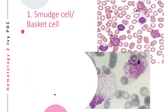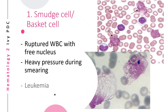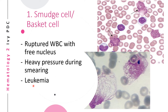Let's start with the smudge cell, also known as the basket cell. These cells are ruptured white blood cells leaving their nucleus free. They can be pathologic or non-pathologic. A non-pathologic cause may be during smearing — smudge cells are produced if there is heavy pressure on the spreader slide. A pathologic cause may be due to leukemia. It looks like a basket with a handle, and is also called a smudge cell because it looks like a smudged cell.